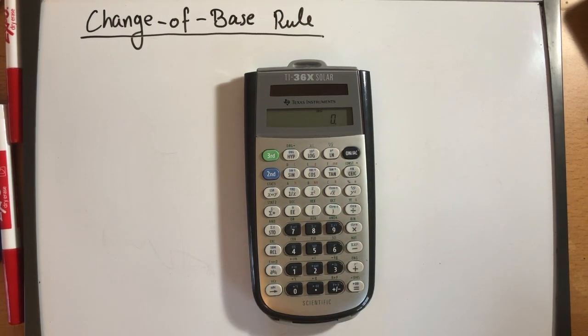Now, scientific calculators, unfortunately, most of them do not solve logs of any base. They only solve log problems of base 10 or base e. Therefore, the change of base rule is critical in order to solve any log problem that we want to solve if we were to change the base to base 10 or to base e.